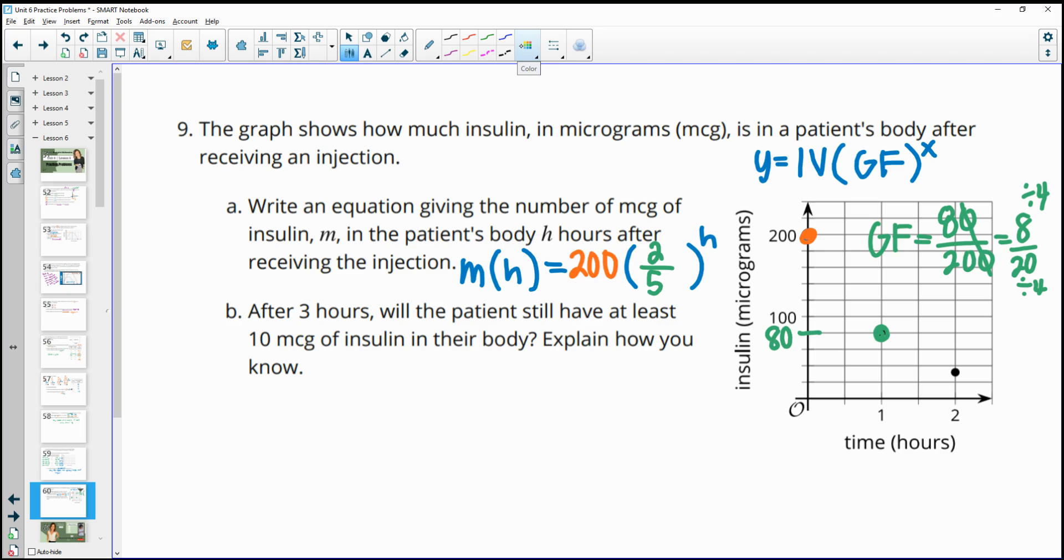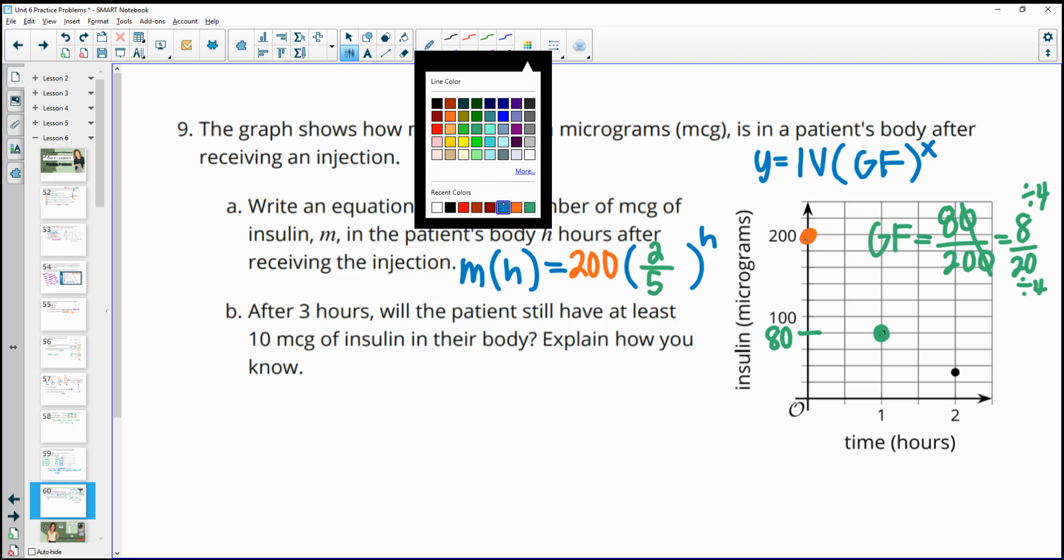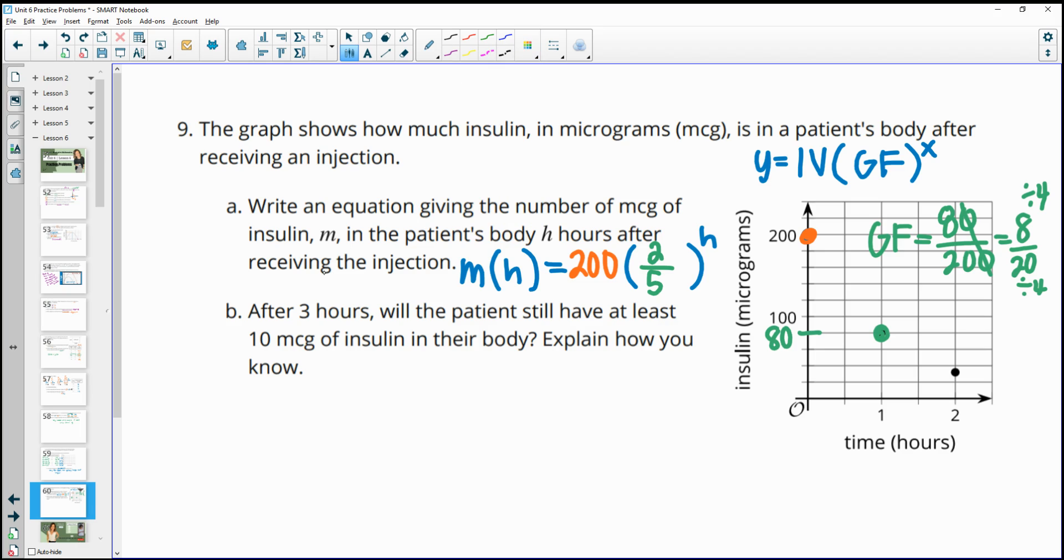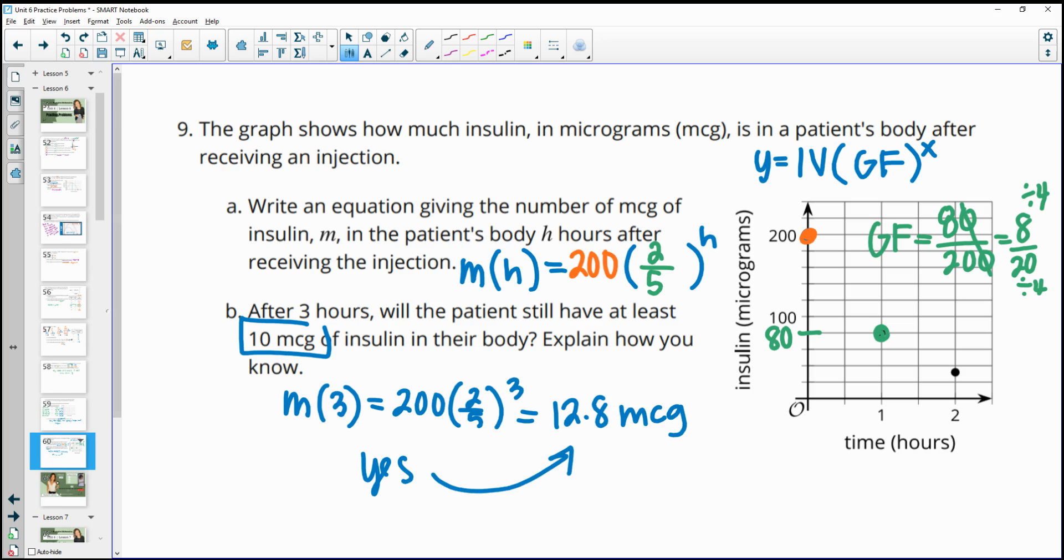So now it wants to know, after three hours, will the patient still have at least 10 micrograms of insulin? So we just want to plug three into this function. So we want to look at what M of 3 equals. So we'll do 200 times two-fifths to the third, and this will give us 12.8 micrograms. And so the answer to this is that at least 10, yes. Okay, so yes, because they have 12.8, which is at least as big as 10, bigger than 10, right?